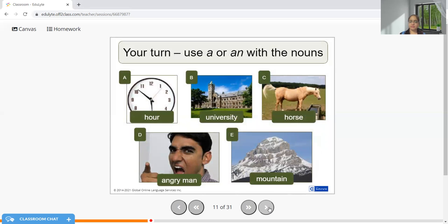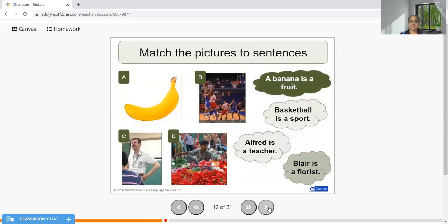We have more pictures: an hour, a university, a horse, an angry man, a mountain, a banana. A banana is a fruit, basketball is a sport, Alfred is a teacher, and Blair is a florist. So I'm sure now you are able to connect where we are using 'a' and 'an' respectively.